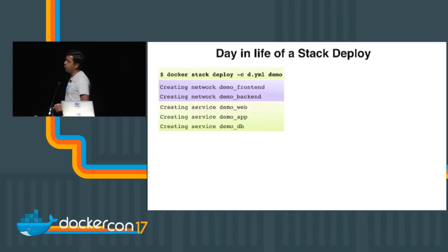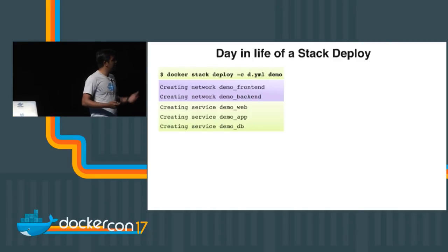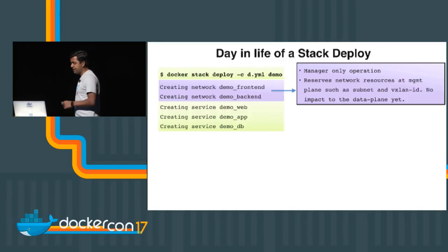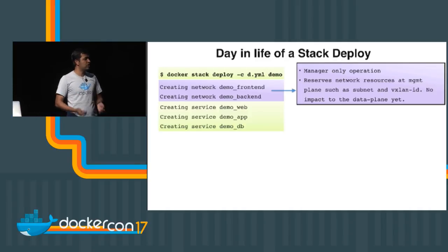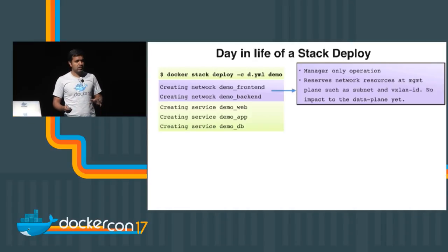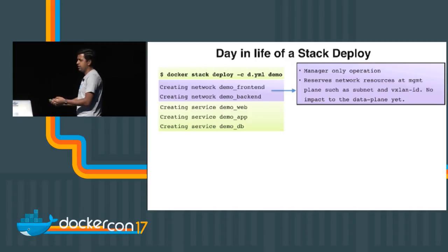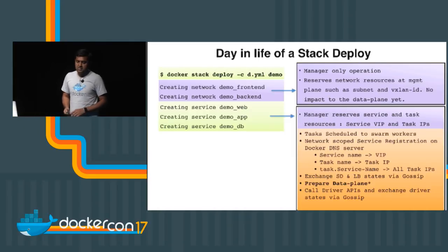Let's dig deeper into what a stack deploy does. From the application layer standpoint — the green color — we do a docker stack deploy, and then the management plane takes over. In Swarm mode, network create is a pure manager-only operation. It doesn't touch the worker nodes — the worker doesn't even know the network is being created because there's no service launched yet. When no service is attached to a particular network, the manager reserves resources: for example, the Swarm manager will allocate a subnet for this network and reserve VXLAN IDs. It has no impact on the data plane yet.